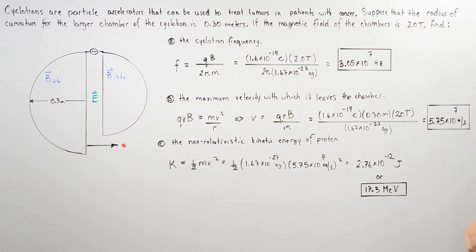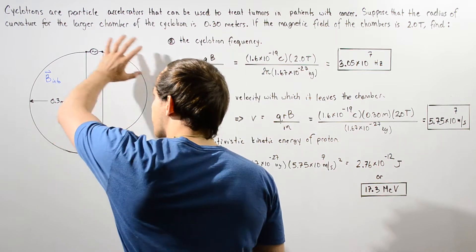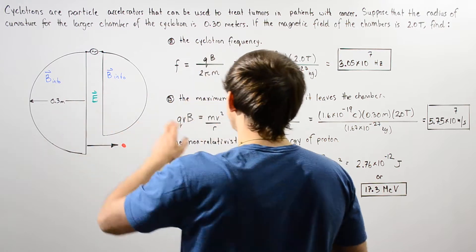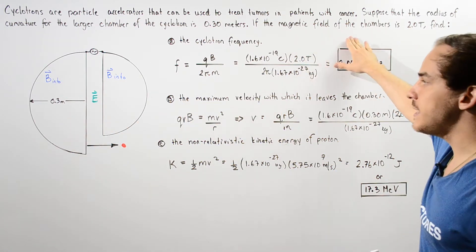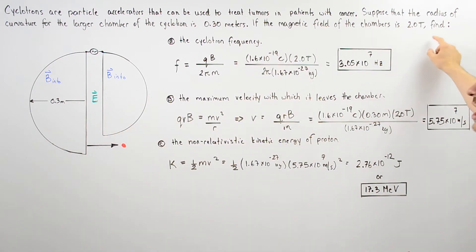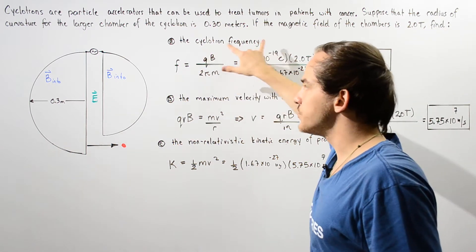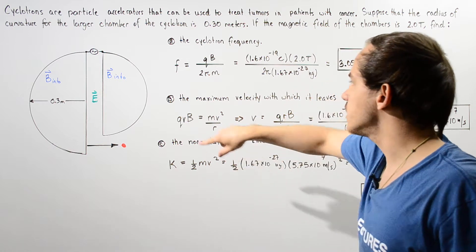Suppose that the radius of curvature for the larger vacuum chamber of this cyclotron is 0.3 meters, as shown in this diagram. If the strength of the magnetic field inside the chambers is given by 2 Tesla, find in part A the cyclotron frequency of our proton inside our cyclotron.